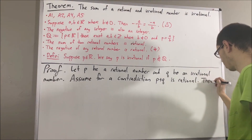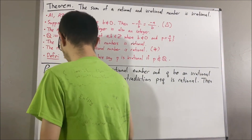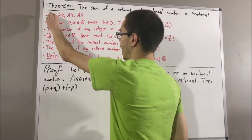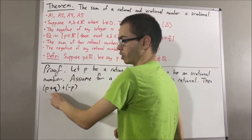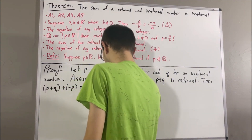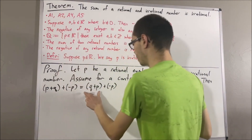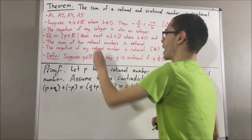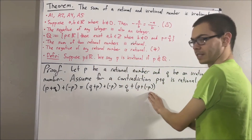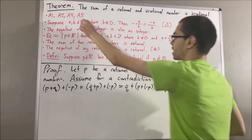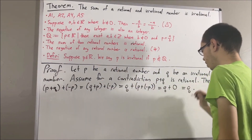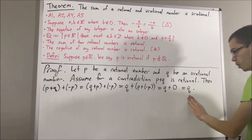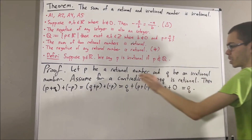Notice if we perform p plus q plus the negative of p: by axiom 1, p plus q is equal to q plus p. Then by axiom 2, we can move the parentheses around p plus negative p. By axiom 5, p plus the negative of p is equal to 0. By axiom 4, q plus 0 is equal to q. So this shows that p plus q plus the negative of p is equal to q, which we know is an irrational number.